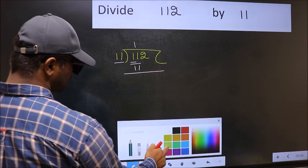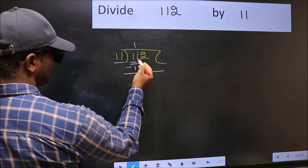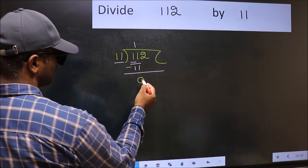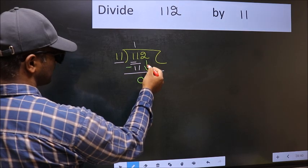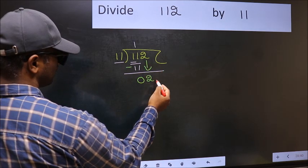Now you should subtract. 11 minus 11, 0. After this, bring down the beside number. So 2 down.